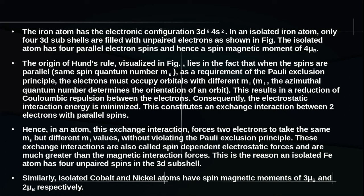Similarly, isolated cobalt and nickel atoms have spin magnetic moments of 3 Bohr magnetons (3 μB) and 2 Bohr magnetons (2 μB) respectively, where μB is the Bohr magneton.